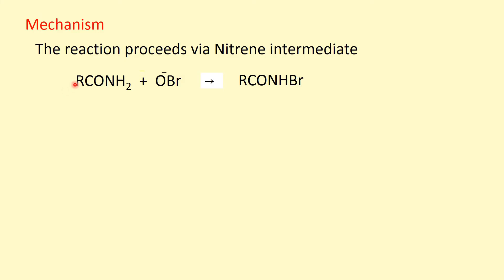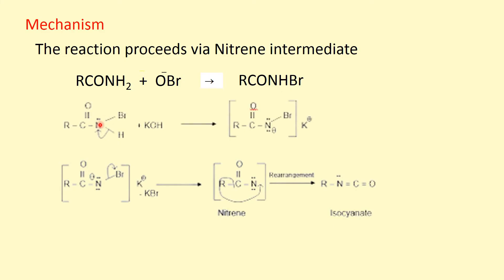This amide reacts with hypobromite ion — sodium hypobromite NaOBr or potassium hypobromite KOBr. The hypobromite ion OBr⁻ takes the hydrogen attached to nitrogen, removed as OH⁻, and the remaining part is RCONHB r. Then, alkali or hydroxyl ion takes this hydrogen, and the bonded electron pair of nitrogen shifts to nitrogen, so this nitrogen atom gets a negative charge in this species.